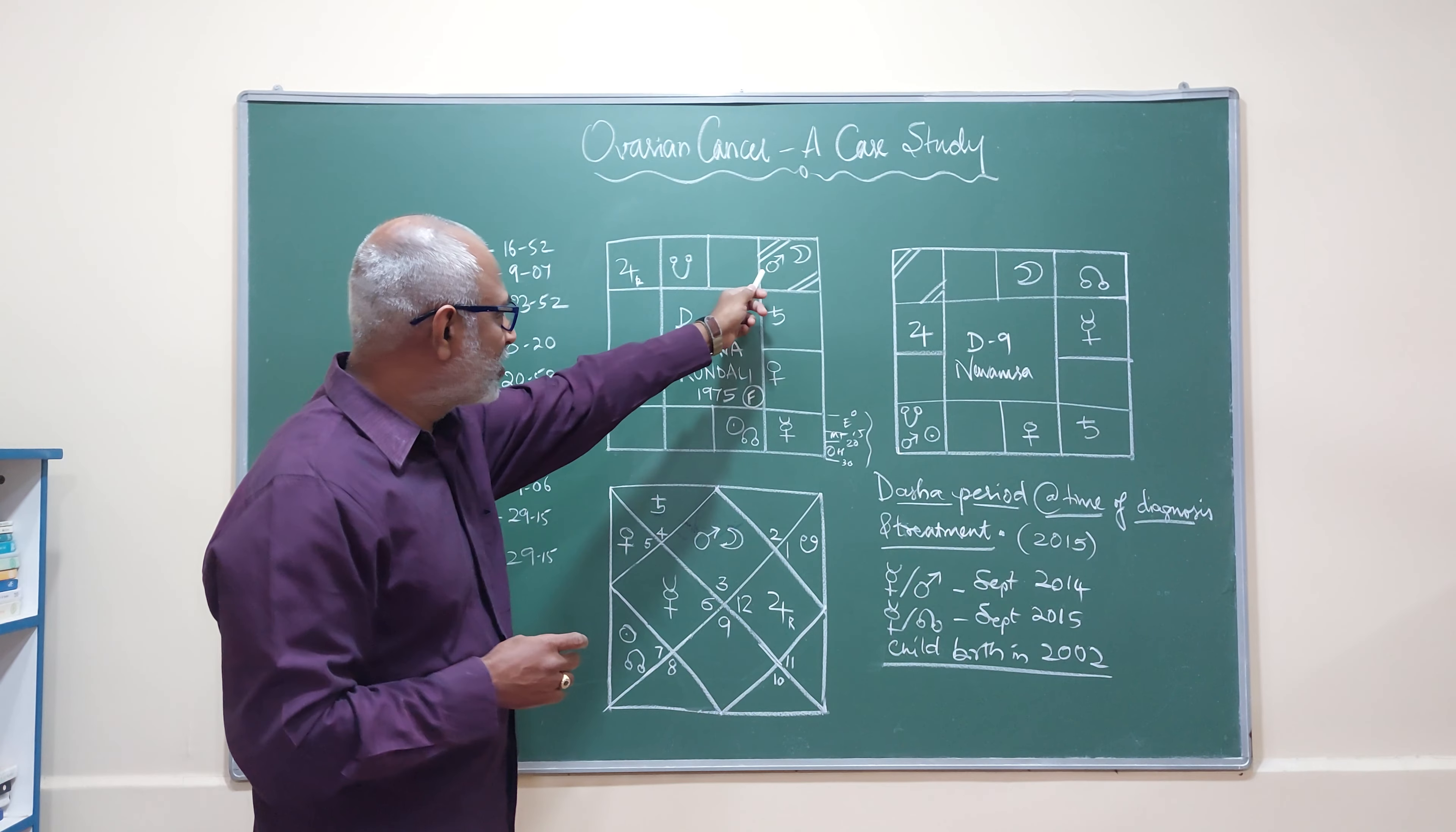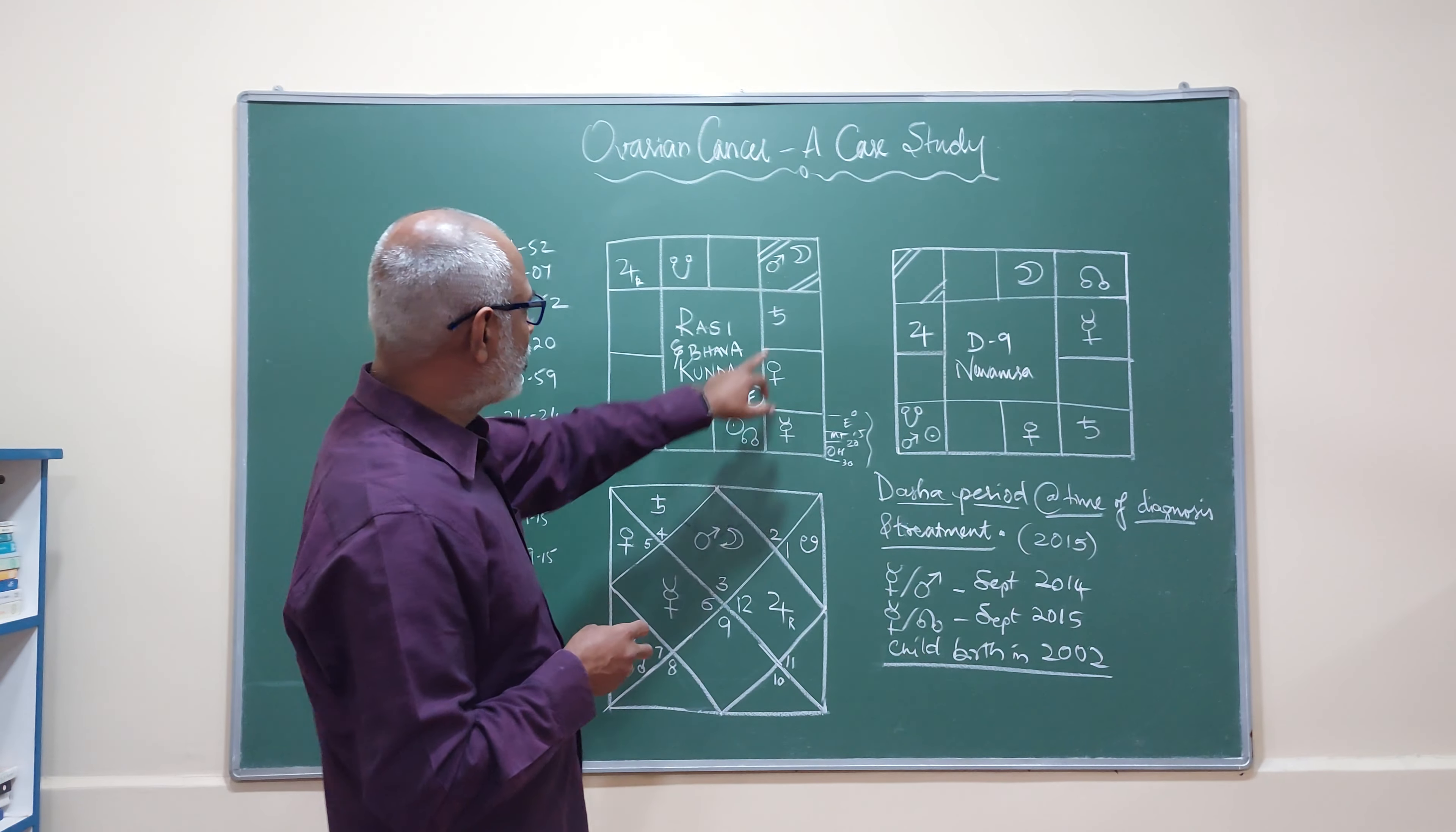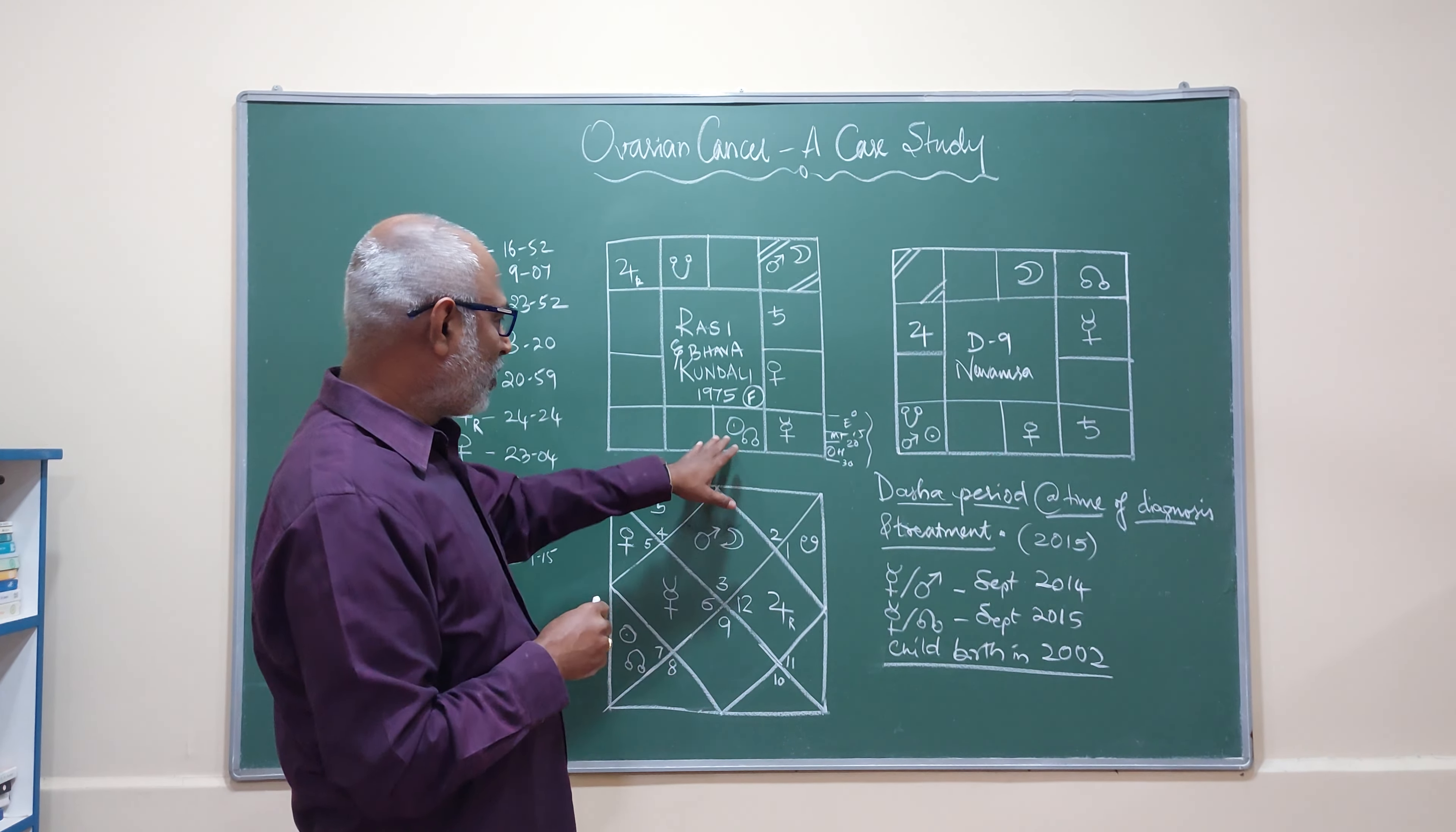Where it might happen, we need to see the Drakkana chart. I told you it's going to be too detailed and advanced. Mars is at 8 degrees, first Drakkana. So, it is here only. Lagna is at 16 degrees 52 minutes, it is in the second Drakkana. So, it falls here. If I go the way, it will be very advanced. I don't want to do that. Let us understand with the basic concept.